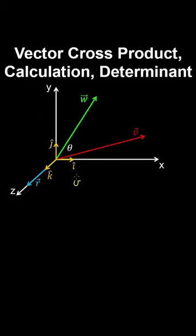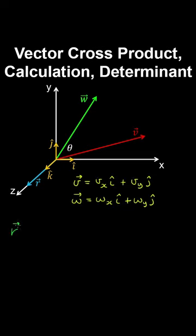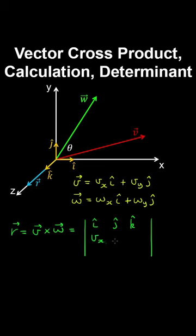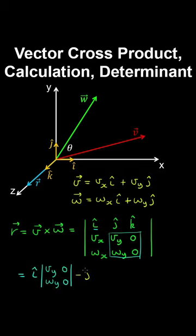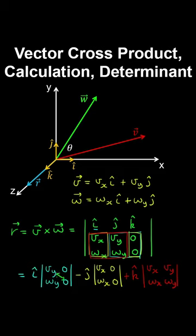Suppose we have vectors V and W in the x,y plane, represented using their components. The cross product between these vectors can be calculated using the determinant of a matrix. In the first row we write the unit direction vectors, and in the subsequent rows we write the components of vectors V and W. Expanding out the determinant, each unit vector is multiplied by the determinant of its minor matrix.